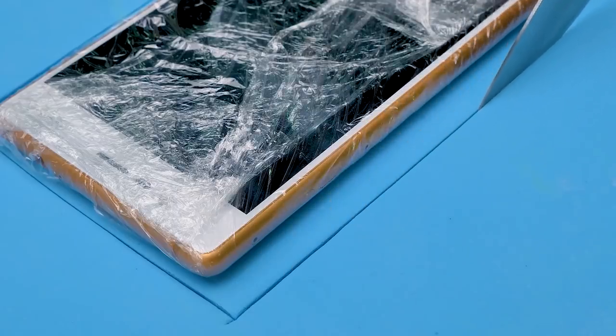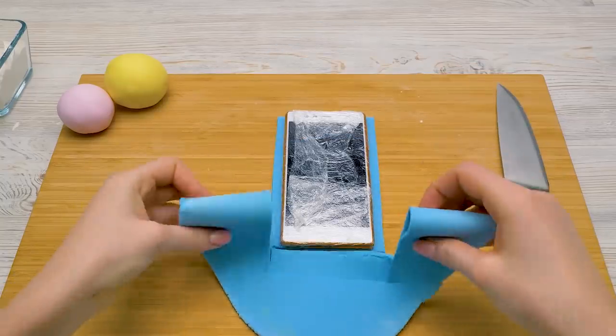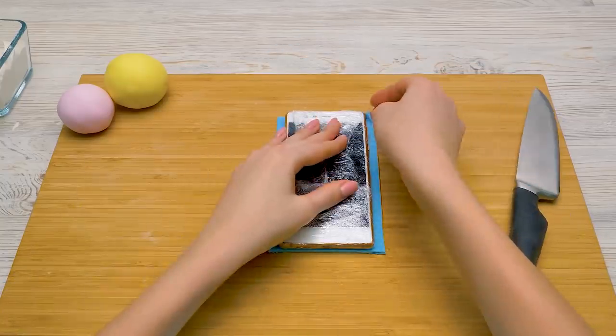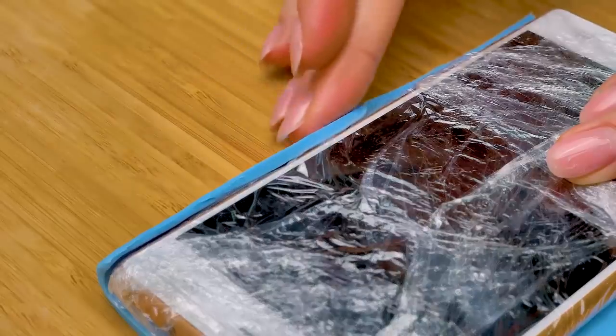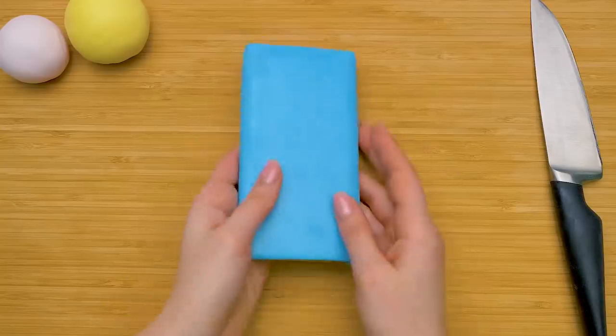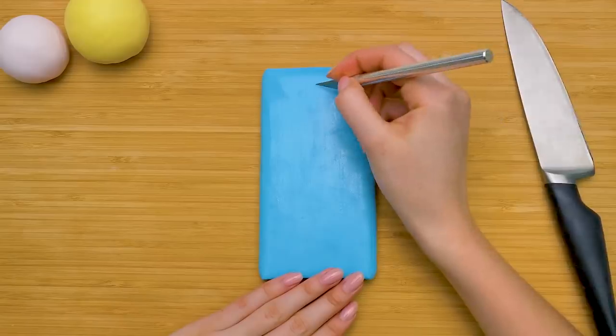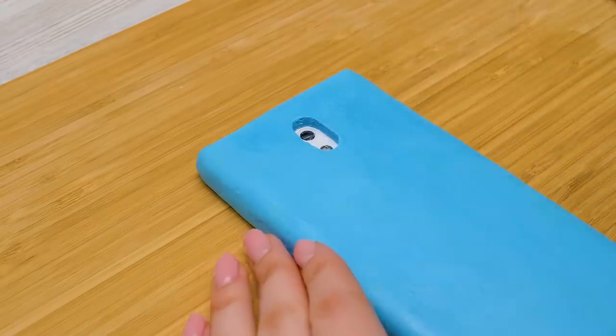And now, I'll cut a phone case out of the fondant. Leaving some extra fondant all around the phone. And don't worry if your lines aren't straight. That can be easily fixed. Let's fold the edges in now. On all sides. Oh, don't forget to wrap your phone before you do it. And I forgot about the camera. We need to make an opening for it. Carefully! That's better!